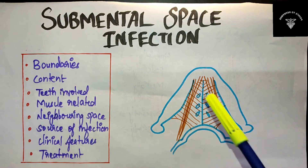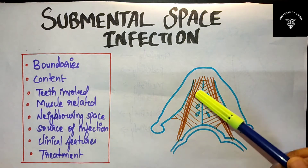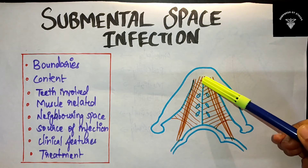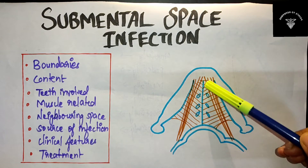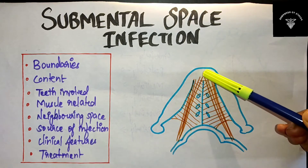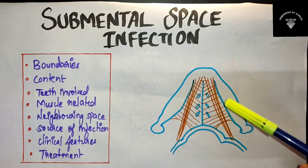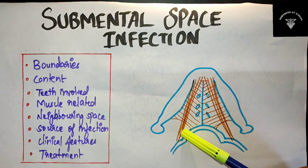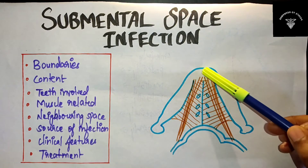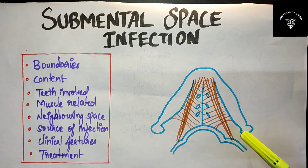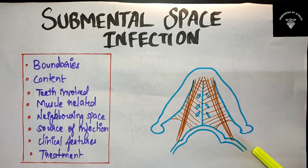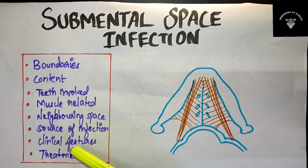Have a look at this diagram. The submental space is here. This will be your anterior belly of digastric muscle, and this will be your mandible. This is the hyoid bone. I have given the gist of things — you have to explain these headings in detail.